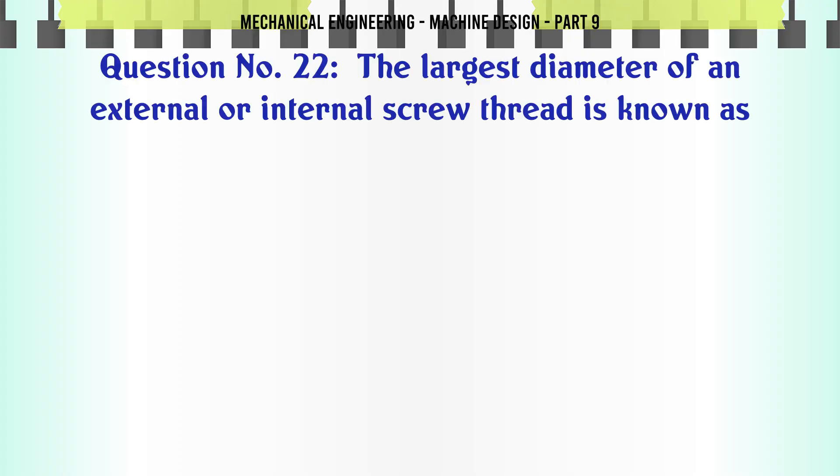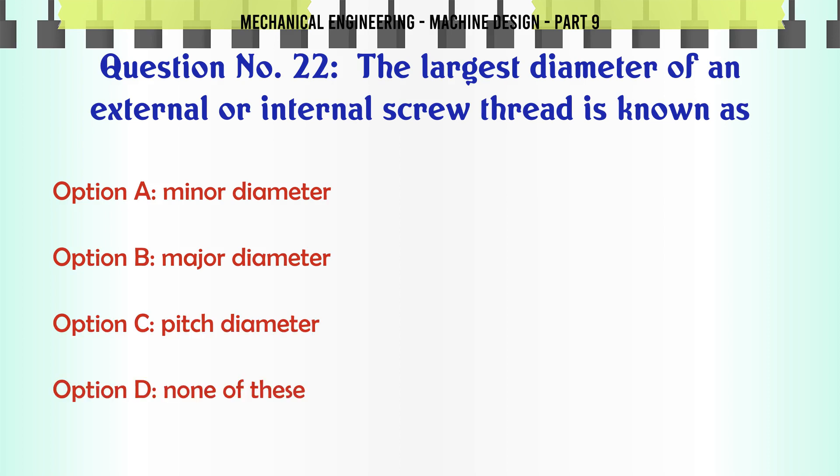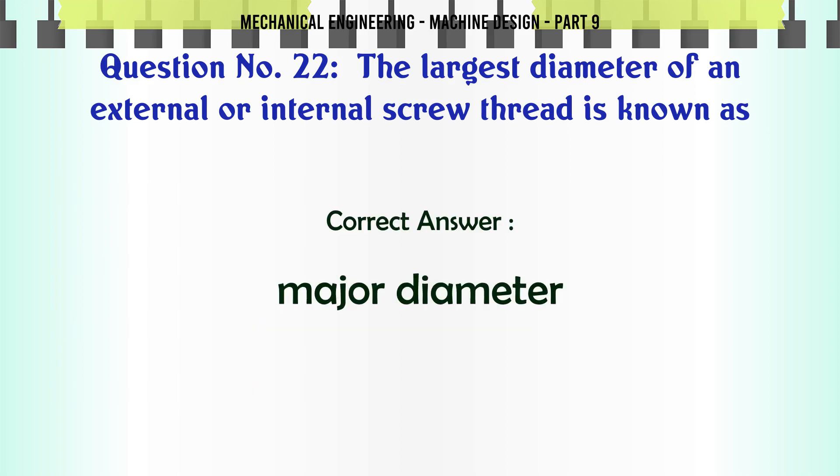The largest diameter of an external or internal screw thread is known as: A. Minor diameter, B. Major diameter, C. Pitch diameter, D. None of these. The correct answer is Major diameter.